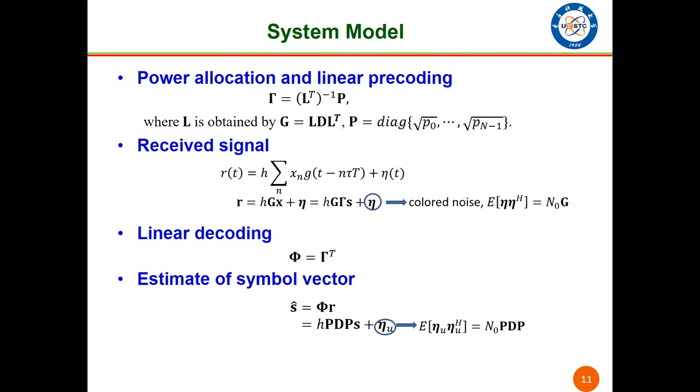The power allocation and linear pre-coding matrix gamma equals the product of the inverse of L^T and P, where L is obtained by the LDL decomposition of G, and P is a power allocation matrix which is a diagonal matrix. The received signal is R, and the noise vector is actually colored noise, and its covariance matrix is n_0 G.